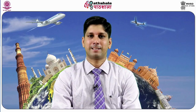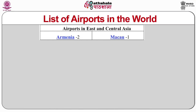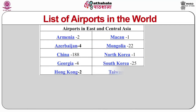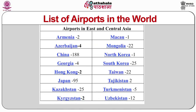Let us now discuss airports in East and Central Asia. Armenia has 2 airports, Macao 1, Azerbaijan 4, Mongolia 22, China 188, North Korea 1, Georgia 4, South Korea 25, Hong Kong 2, Taiwan 22, Japan 95, Tajikistan 2, Kazakhstan 25, Turkmenistan 5, Kyrgyzstan 2, and Uzbekistan 12 airports.